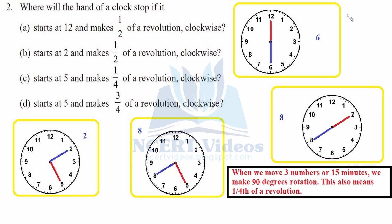So one-fourth of a revolution equals 90 degrees or 15 minutes. For part a: initial position is 12, it makes half a revolution — that is 180 degrees — and the opposite side stops at 6. For part b: starts at 2 and makes half a revolution, so again the opposite side, it stops at 8. Part c: starts at 5, going 5, 10, 15 minutes or three numbers — 6, 7, 8 — so it stops at 8.